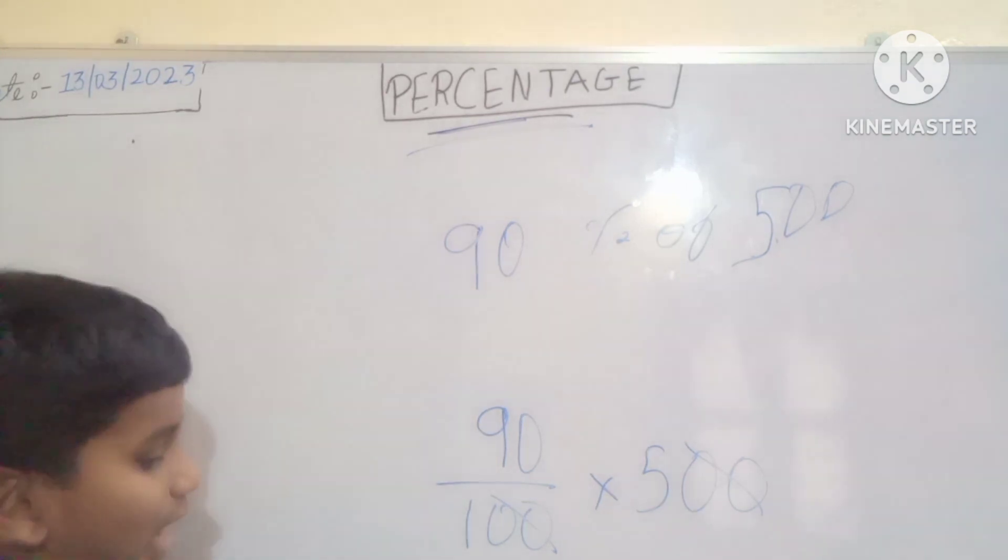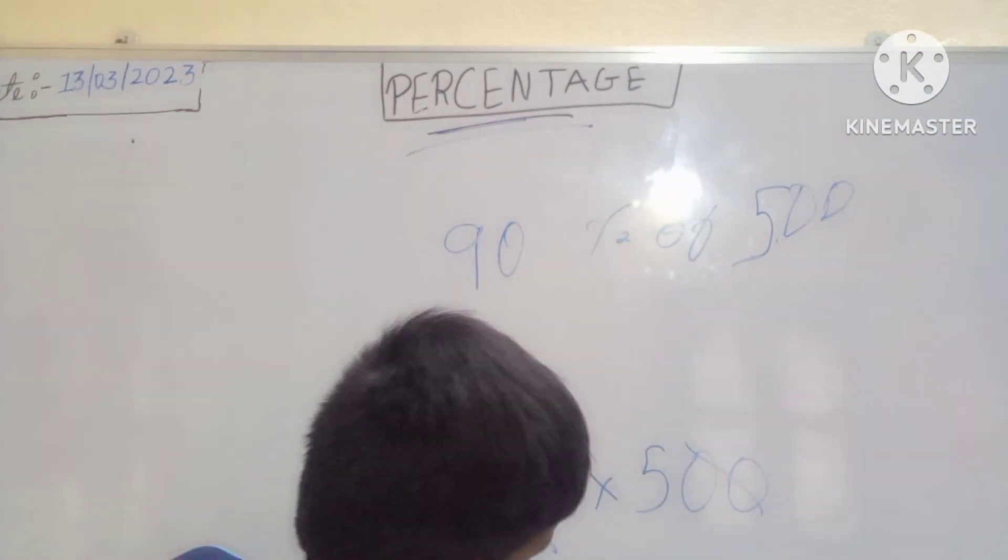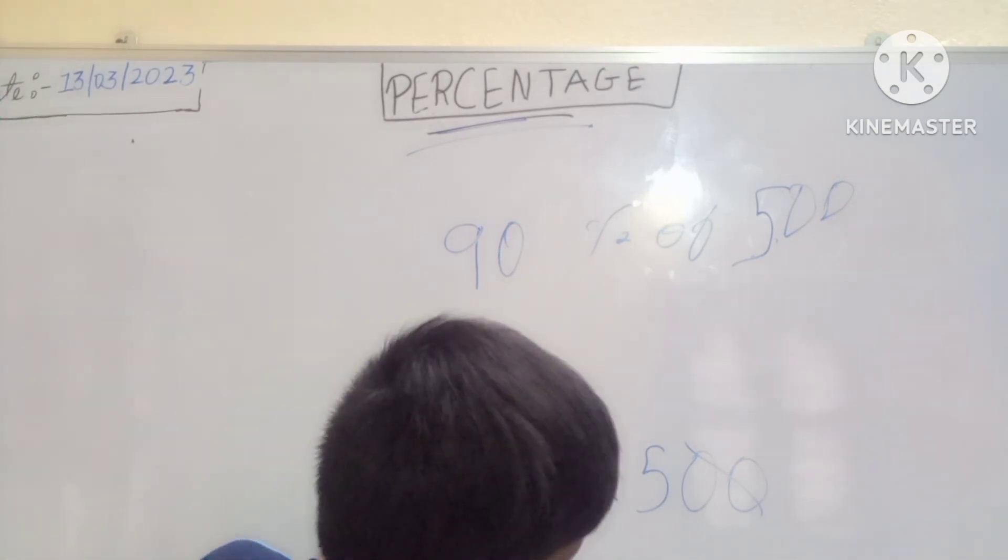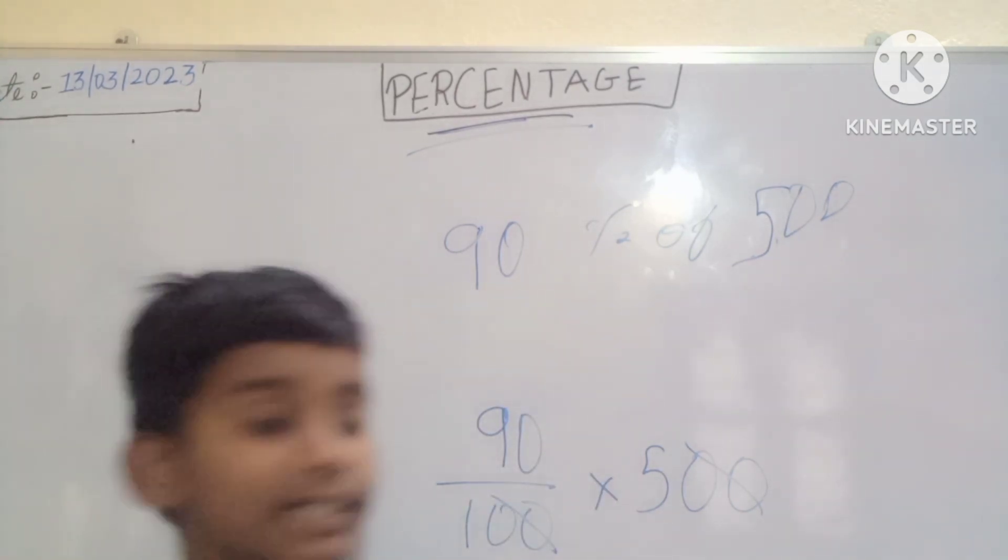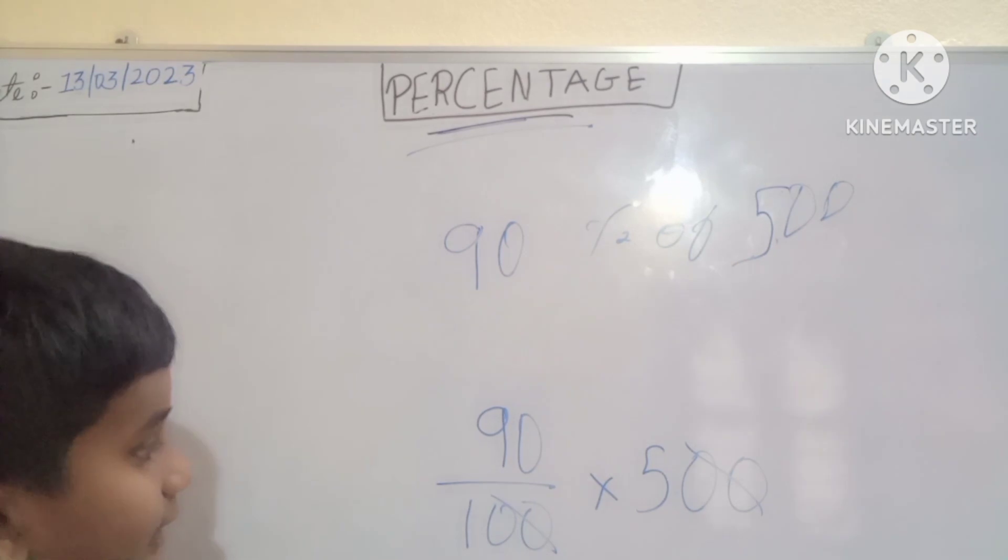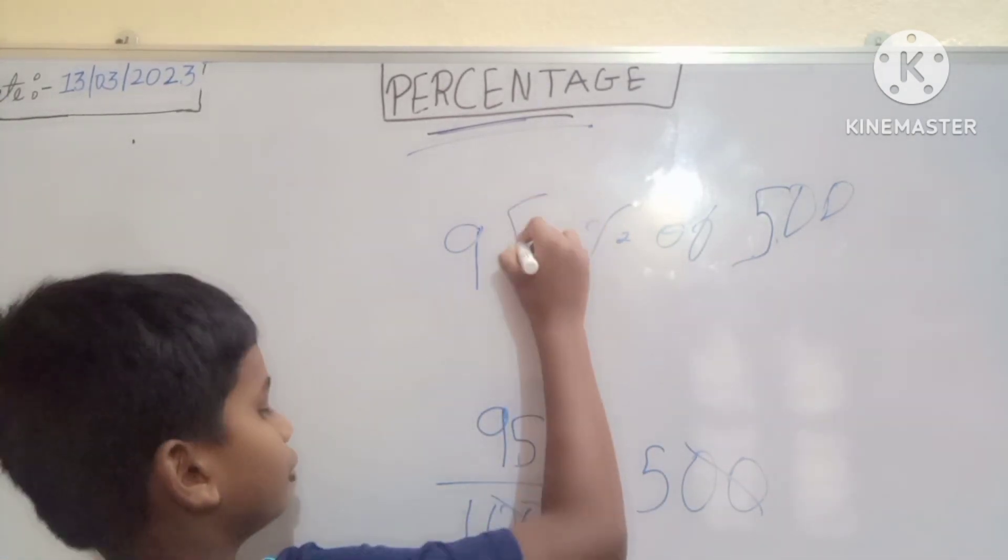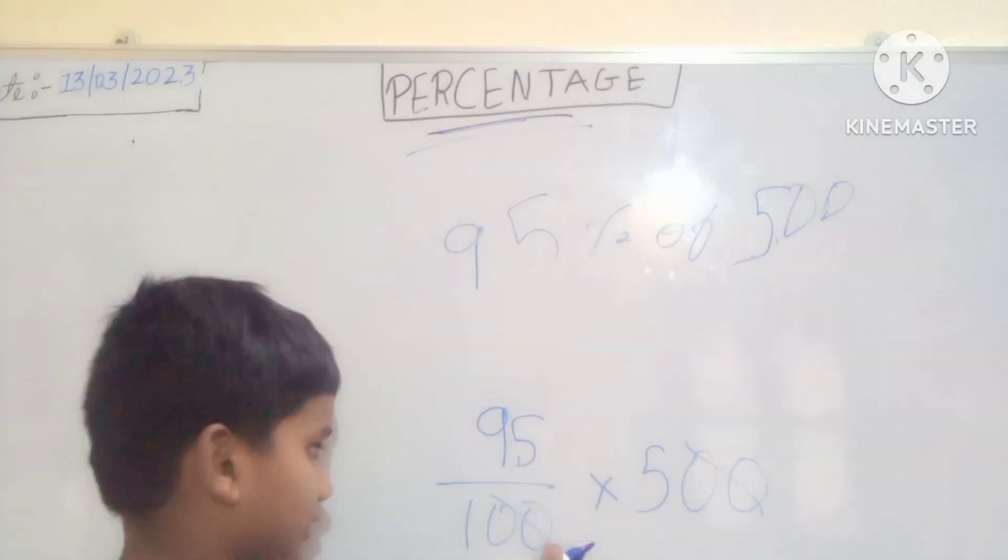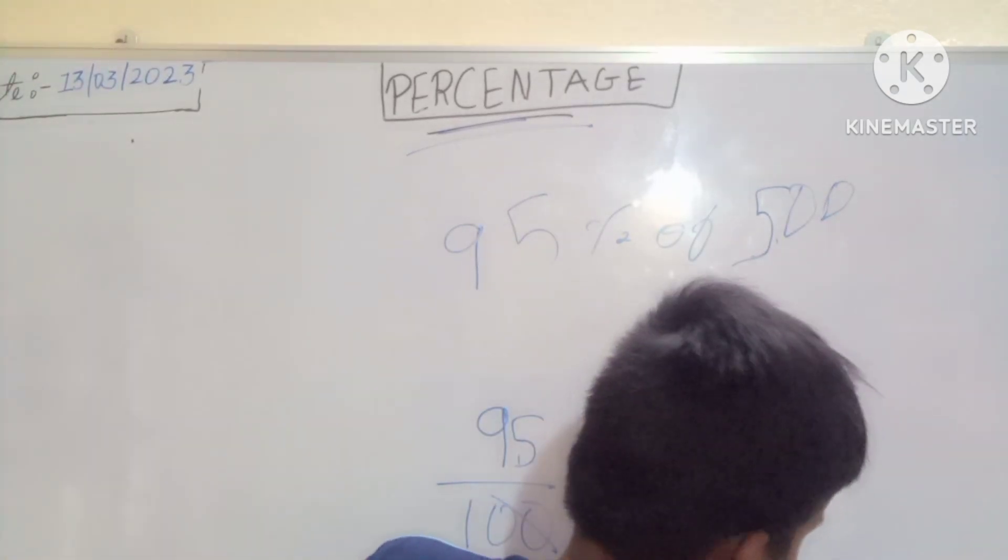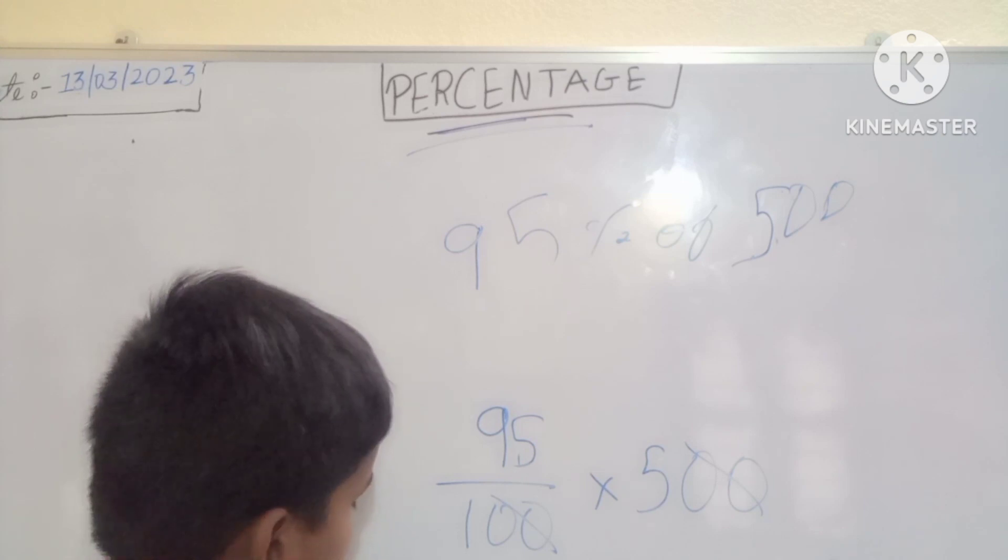Now you will get it is easy to multiply by zero. If it is not 90, it is 95, what can we do now? Same thing: zeros cut, 5 times 95. You got 475 out of 500.